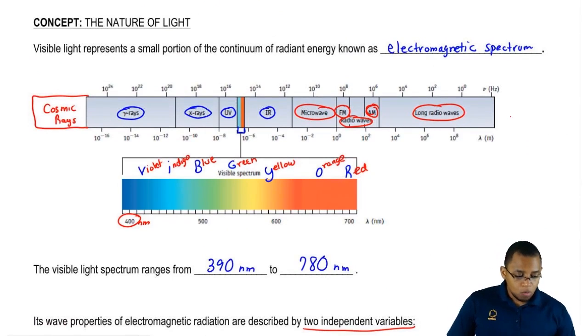As you can see, it looks like long radio waves have the highest wavelength because they're above 10 to the 8 meters. But as a result, their frequency is very low. They would have the lowest frequency.